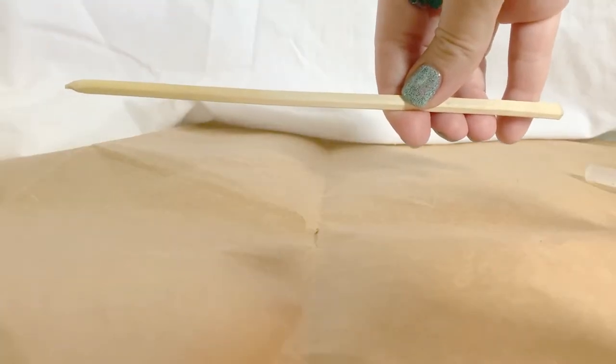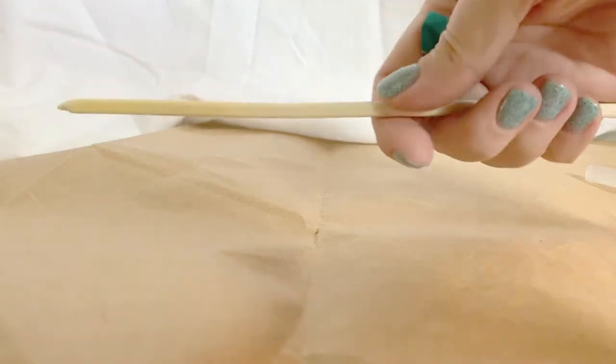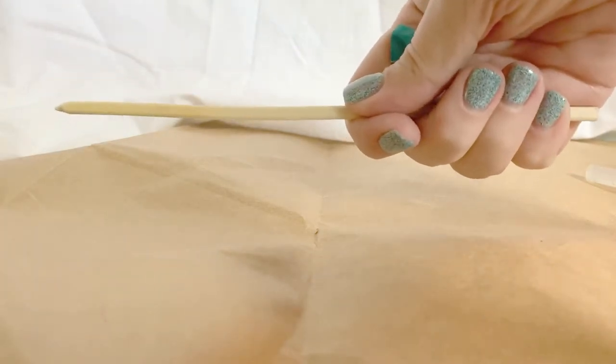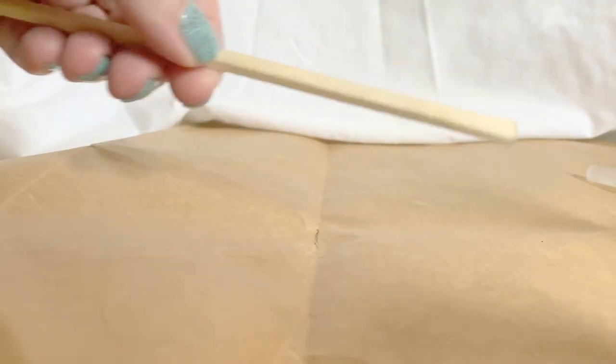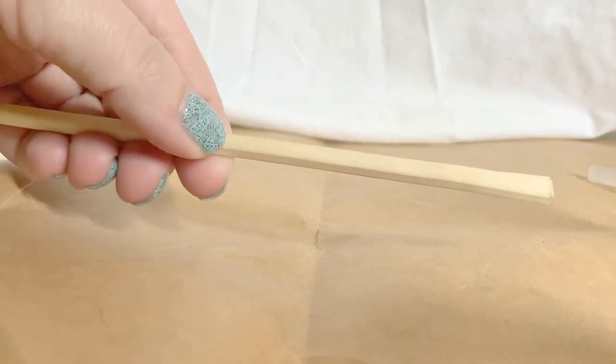Now to figure out how long you want your handle to be you want to hold your wand, figure out about where your hand grip will be and figure that's about where your glue will need to run on your wand.